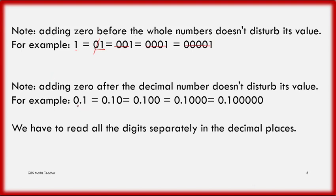Here there is only one decimal digit in 0.1. In 0.10 there are two decimal places, but the trailing zero after the decimal doesn't disturb the value — it doesn't have any meaning.